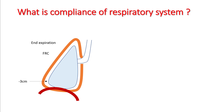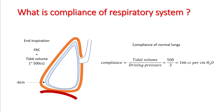Compliance of the respiratory system is tidal volume divided by the driving pressure. The driving pressure is the difference between inspiratory and expiratory pressure. At expiration, intrapleural pressures are about −3, while at end inspiration they are around −6, giving a driving pressure of 3, which yields a compliance of 166 cc per centimeter of water.